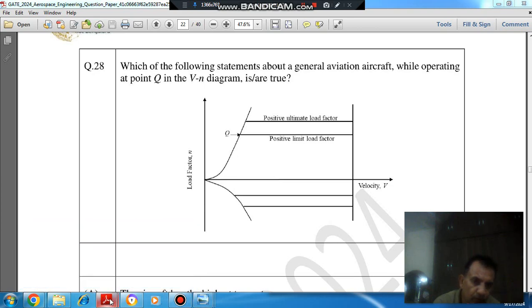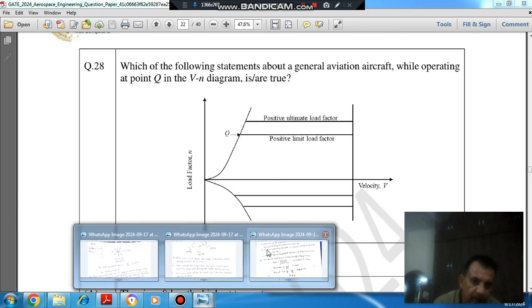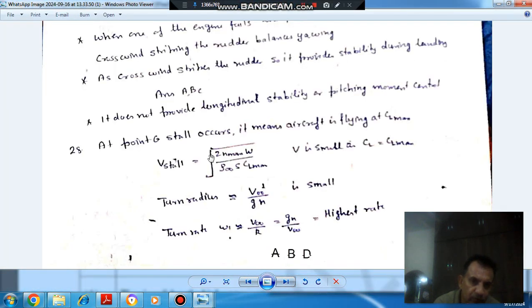So we know that the stall velocity, this is also stall point. Stall velocity is 2N max W divided by rho into S as CL max. So as CL is the coefficient of lift and it is maximum value, stall velocity will be small. So it means V will be small and CL will be CL maximum.